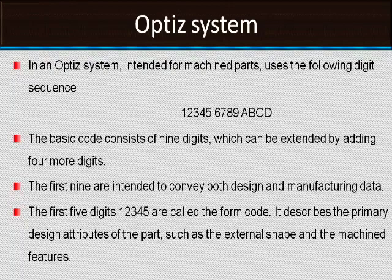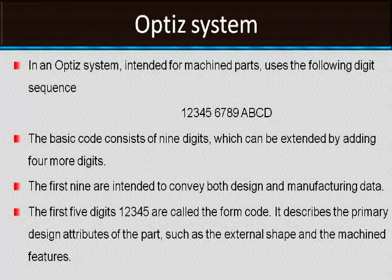The OPEC classification and coding system consists of 13 digits: 1 through 9, followed by A, B, C, D. Digits 1 through 9 follow monocode structure, while A, B, C, D follow polycode structure. The first 9 digits convey design and manufacturing data. The first 5 digits (1–5) are called the form code, which describes primary design attributes of the part.